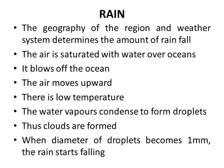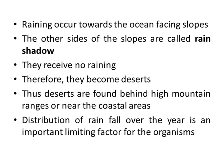Region کی geography اور weather system rainfall کے بارے میں بتاتا ہے۔ Oceans پر air water سے saturate ہو جاتی ہے۔ یہ ہوا سمندر سے اوپر کی جانب move کرتی ہے، جہاں کا temperature low ہوتا ہے۔ Water vapors condense ہو کر droplets بنا دیتے ہیں، بادل بن جاتے ہیں۔ جب droplets کا size 1 mm پہنچ جاتا ہے تب بارش کے قطرے گرنا شروع ہو جاتے ہیں۔ Raining occurs towards the ocean-facing slopes.